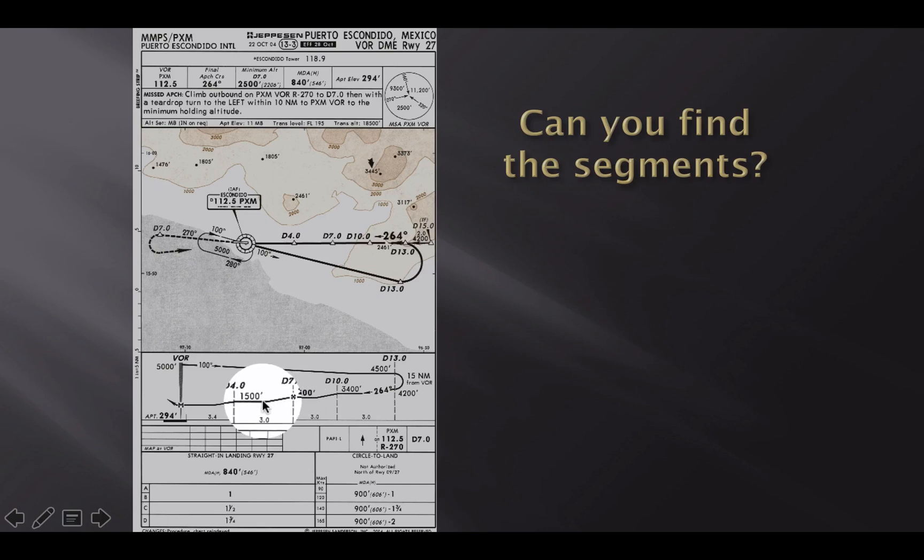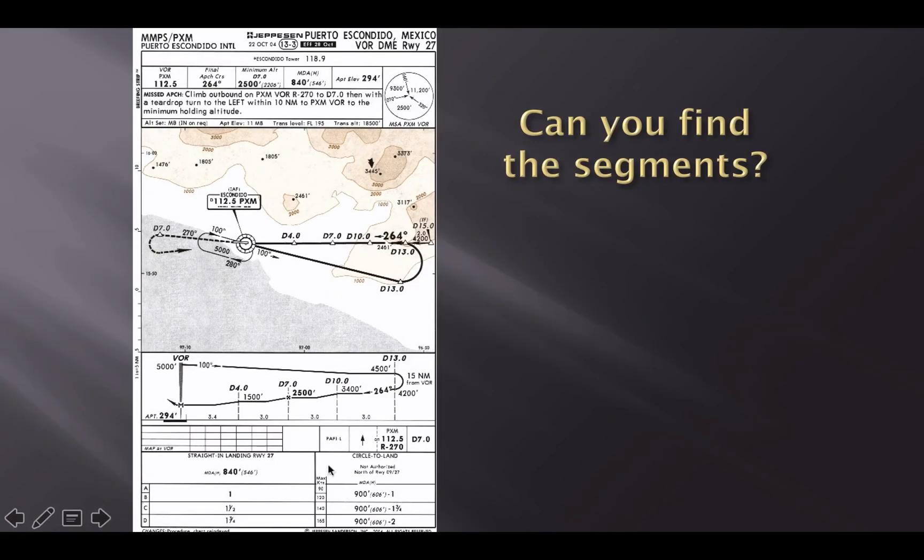So after DME 7, we're on the final segment now down to 1,500 and at D 4.0, I can drop it down to my final altitude. If it's a straight in, it's going to be 840. In a category A or B aircraft, if I am circling to a different runway to land, it's going to be 900 feet, would be the MDA.